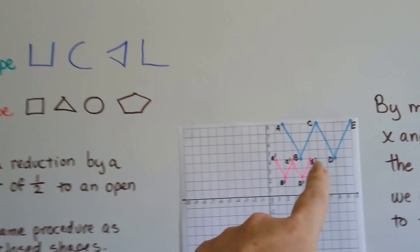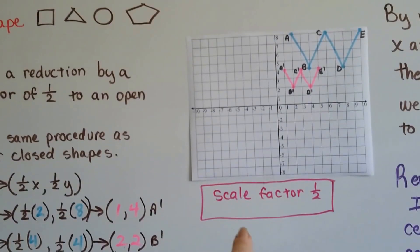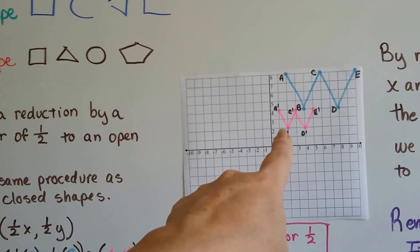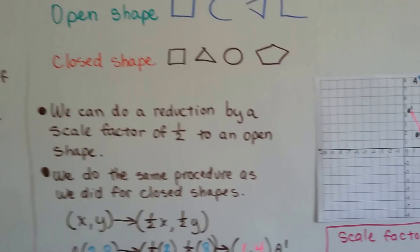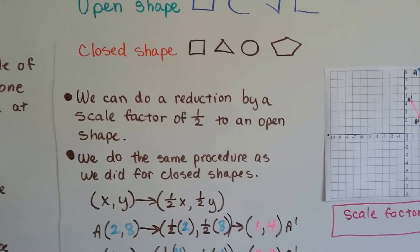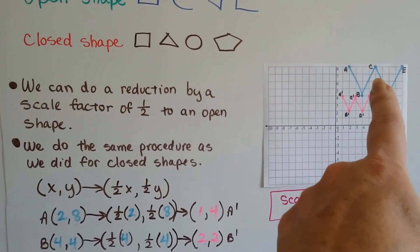See this big blue W? We can dilate it by a scale factor of a half and make the new one the pink one. We do a reduction by a scale factor of a half to an open shape.